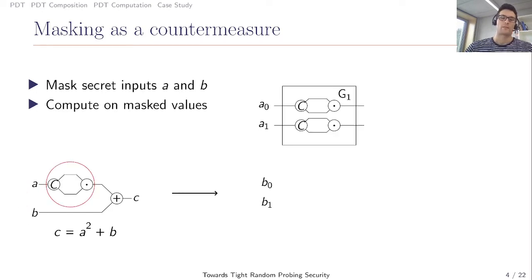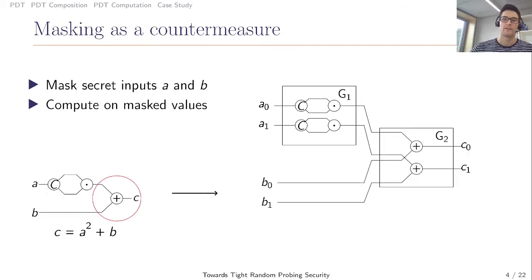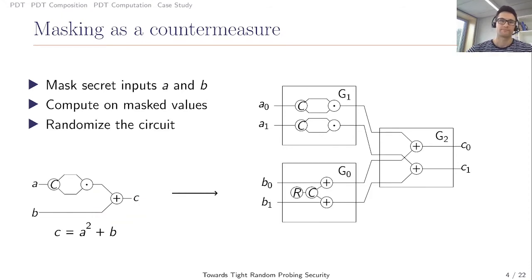Now we only want to compute on the masked values. This means we have to transform the simple square operation into a gadget, which gets as input the masked values of A and outputs a masked value of A square. Then we transform the addition into a gadget which gets as inputs two shared values and outputs the shared values of the addition. We can make the circuit even more secure by randomizing it by adding randomness to the wires such that the correctness of the resulting circuit still holds. We could mask the AES box into three shares.